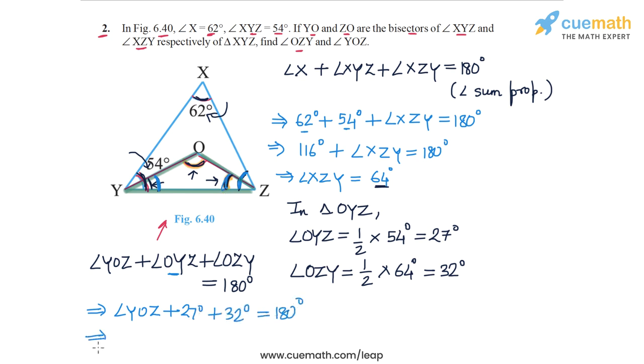And now we can find angle YOZ easily. Angle YOZ plus 27 plus 32 is 59 degrees. So we have 59 degrees is equal to 180 degrees. And from here, we get angle YOZ 180 minus 59, which is 121 degrees.